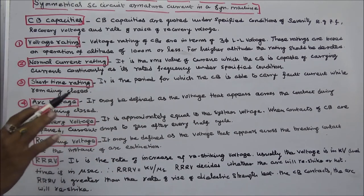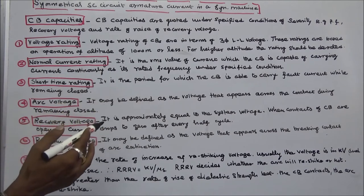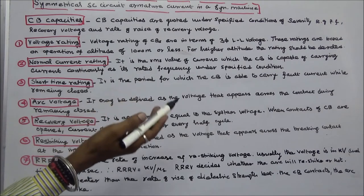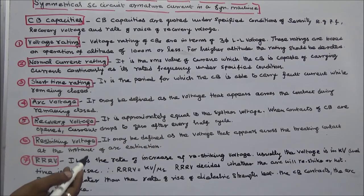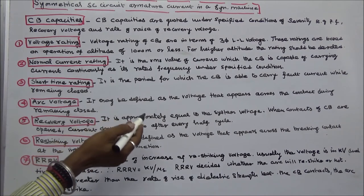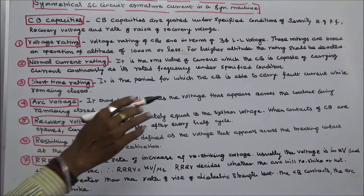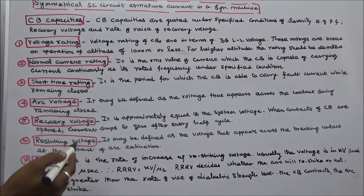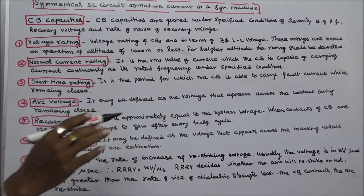Fourth, arc voltage: it may be defined as the voltage that appears across the contacts during the arcing period. Fifth, recovery voltage: it is approximately equal to the system voltage. When contacts of the circuit breaker are opened, current drops to zero after every half cycle.